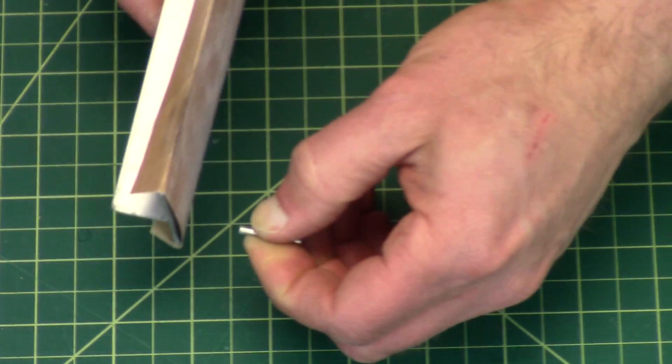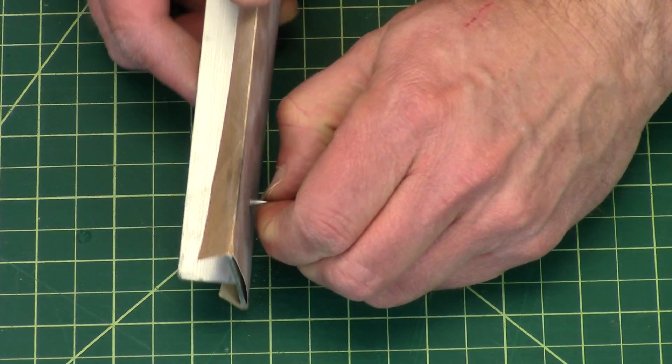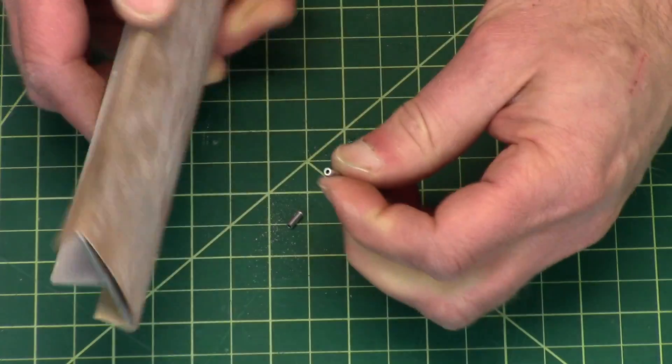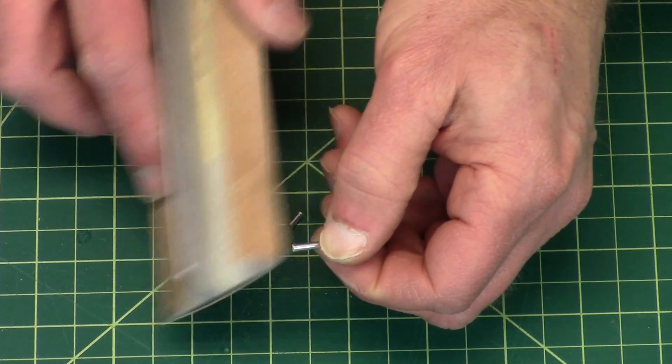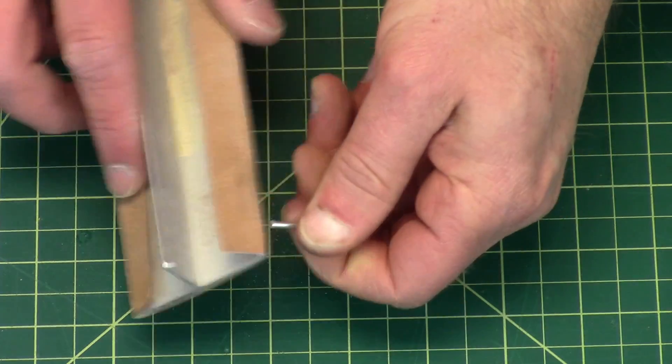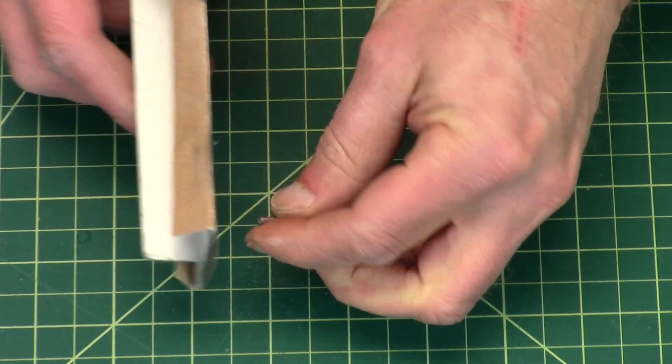And as I'm sanding, I'm rotating the little brass tube so that we get nice and flat. I'm just going to knock off the burr on the outside. Again, I'm spinning it, and I want to do the same to the other side.